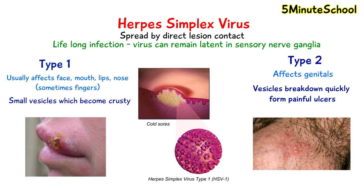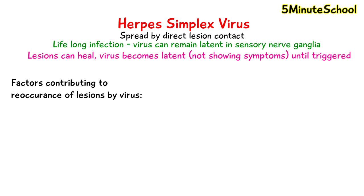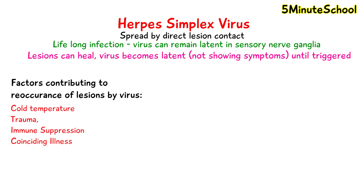The virus can remain latent in sensory nerve ganglia and can reoccur or reactivate if triggered. Some of the factors which contribute to reactivation include cold temperature, trauma, immune suppression, and coinciding illness. Usually before the appearance of the lesion there is a tingling or itchy sensation.